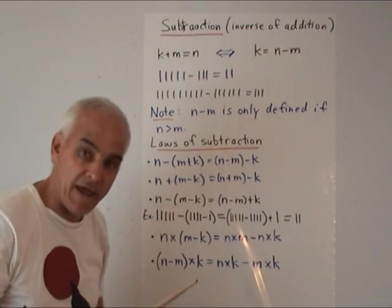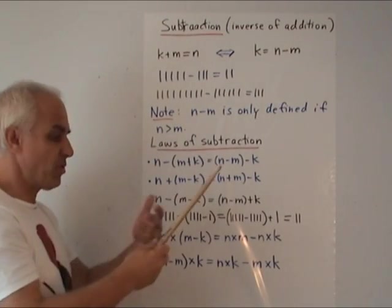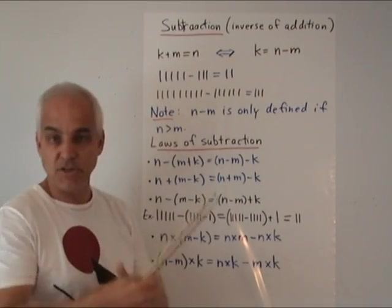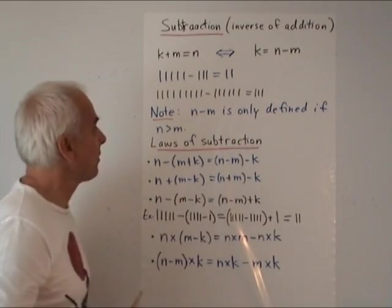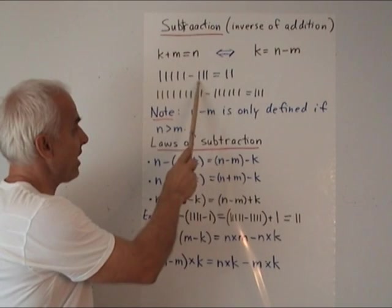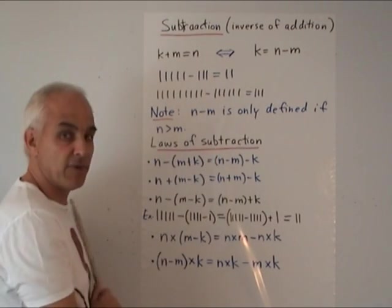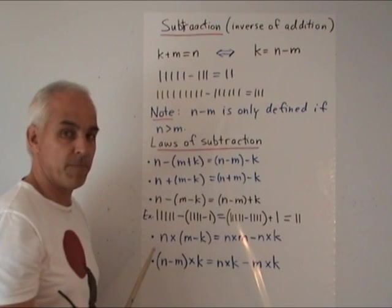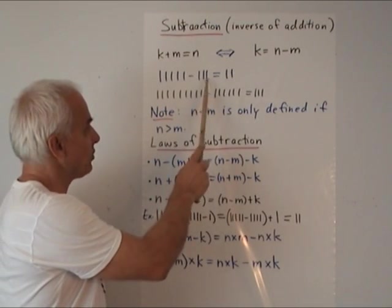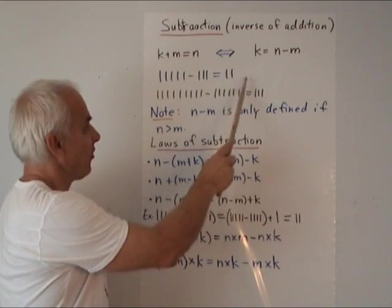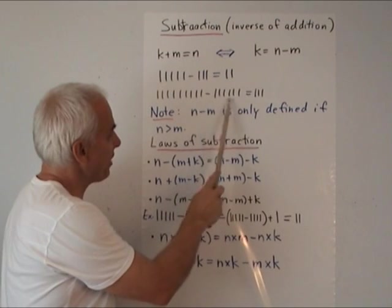What that means is: here we've got K ones, and we're adding M ones to get N ones. That means if we take N ones and take away M ones, we get K ones. So this process of taking away is the opposite of adding on — and that's what subtraction means. For example, five minus three is two, because we take five, take away three, and get two. We can say five equals two plus three, so five minus three equals two.